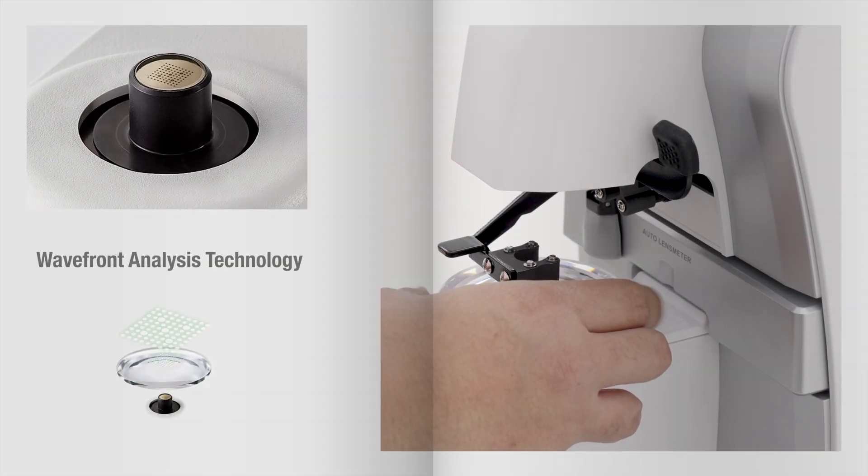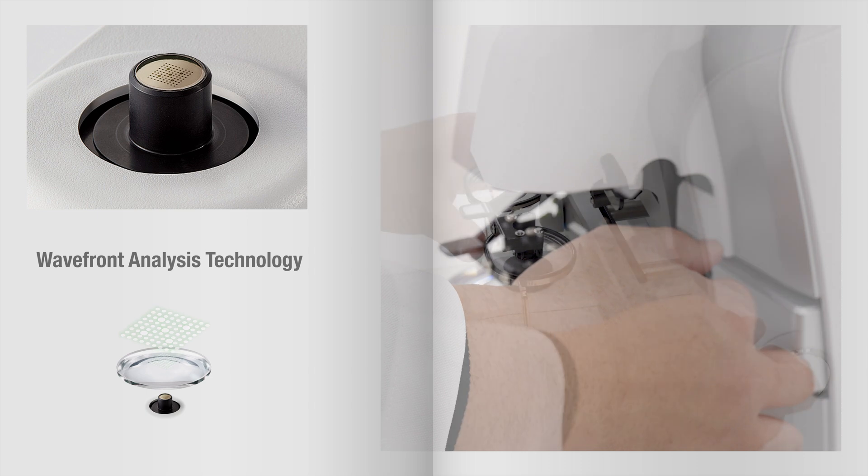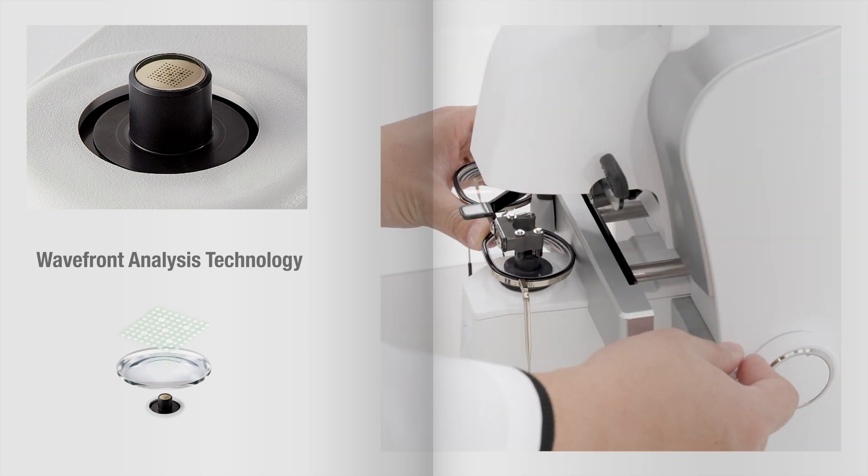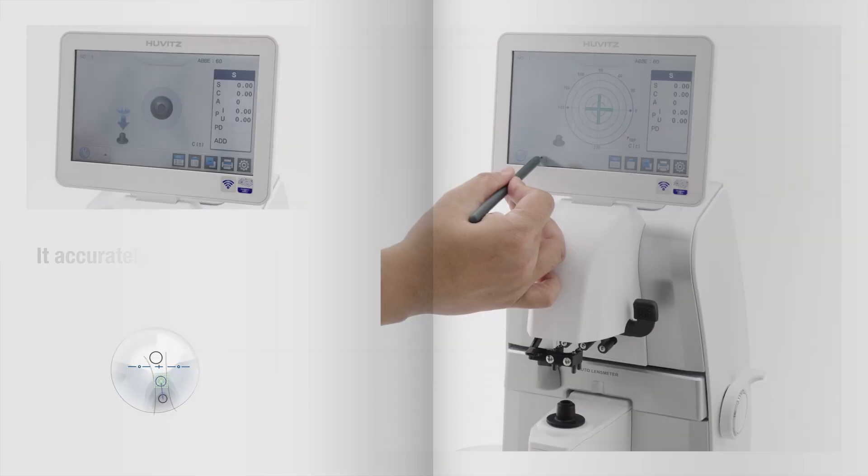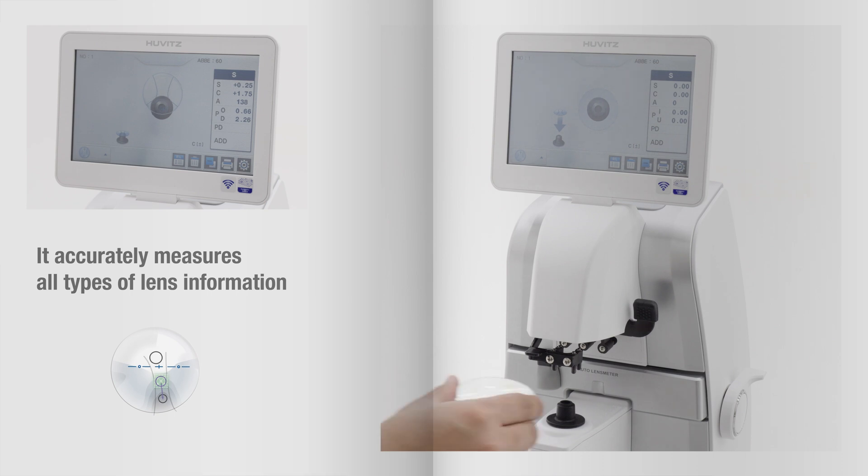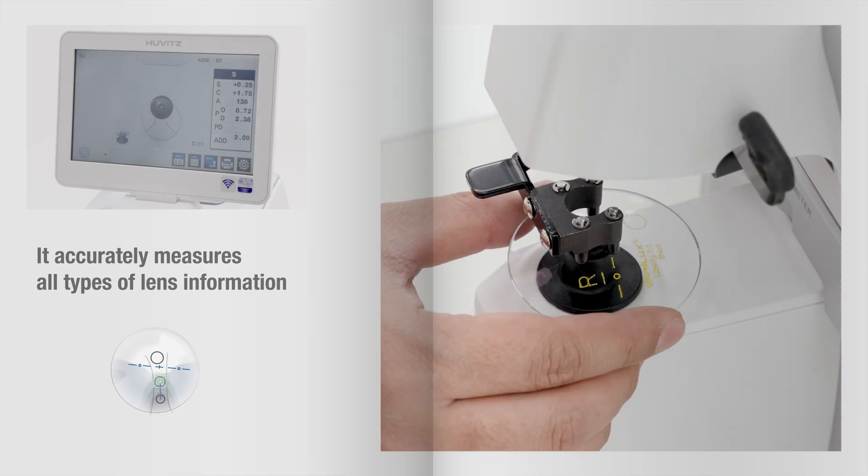Additionally, utilizing the wavefront analysis technology of the Hartmann sensor and a green light beam, the HLM 9000 accurately measures all types of lens information, including progressive multifocal lenses.